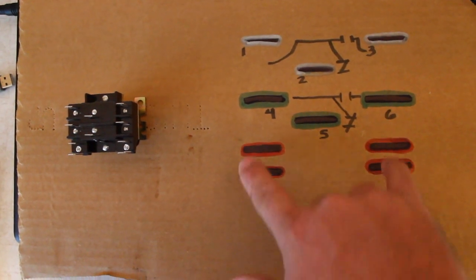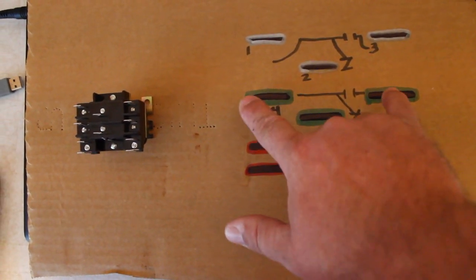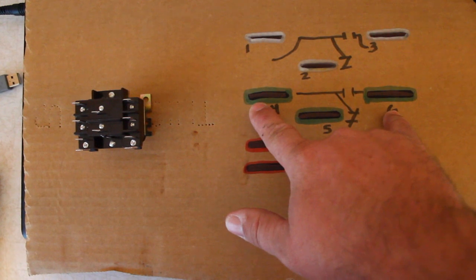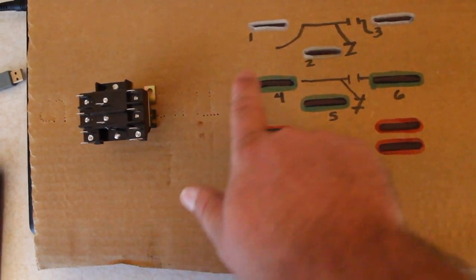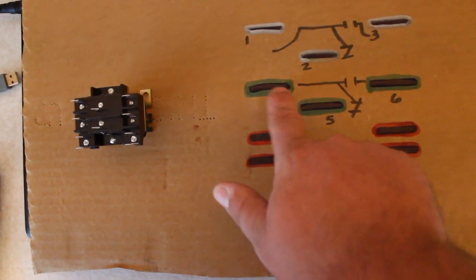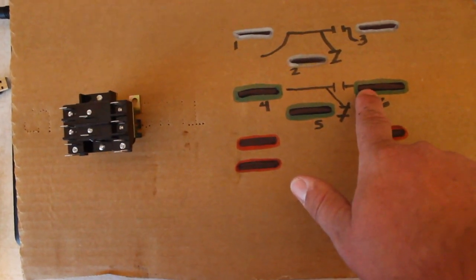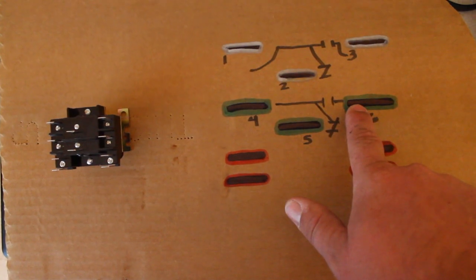When you have power to the coil, four to six becomes closed, four to five becomes open. That is the switch. It switches from power flowing from four to five to four to six. And that's basically all that happens on this relay.